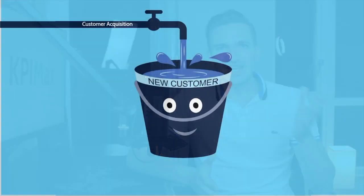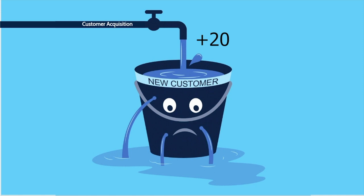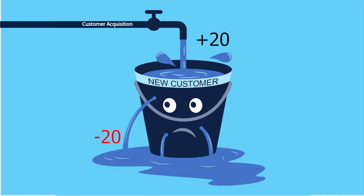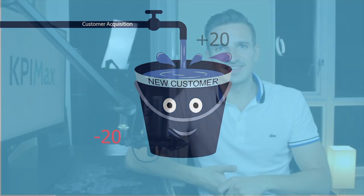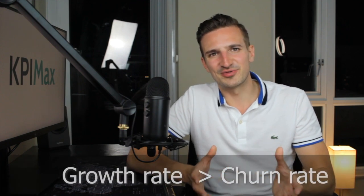The problem with having a high churn rate is that churn behaves much like trying to fill water into a leaky bucket. If you add 20 customers in a month but you also lose 20 customers in the same month, you are back to where you started. It is not until you fix the holes in your leaky customer bucket that you start to make money.